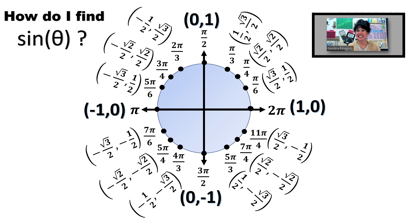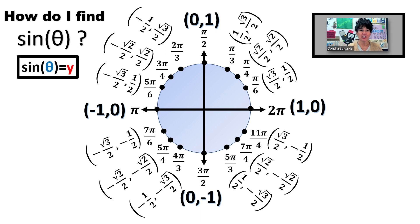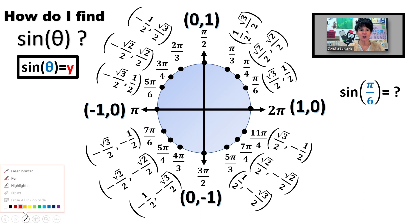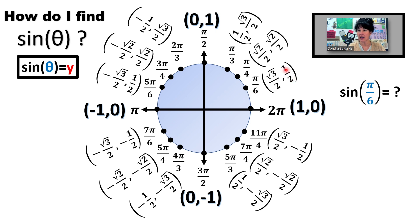Let's start with evaluating sine of theta. All you need to do is go to the angle measure and the answer is the y-coordinate on the unit circle. For example, sine of pi over 6 — if I go to pi over 6, the answer is the y-coordinate, which is 1/2.